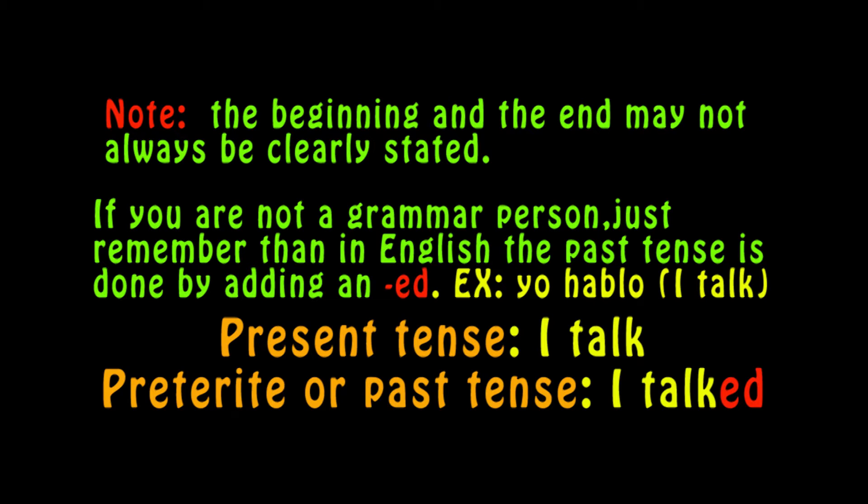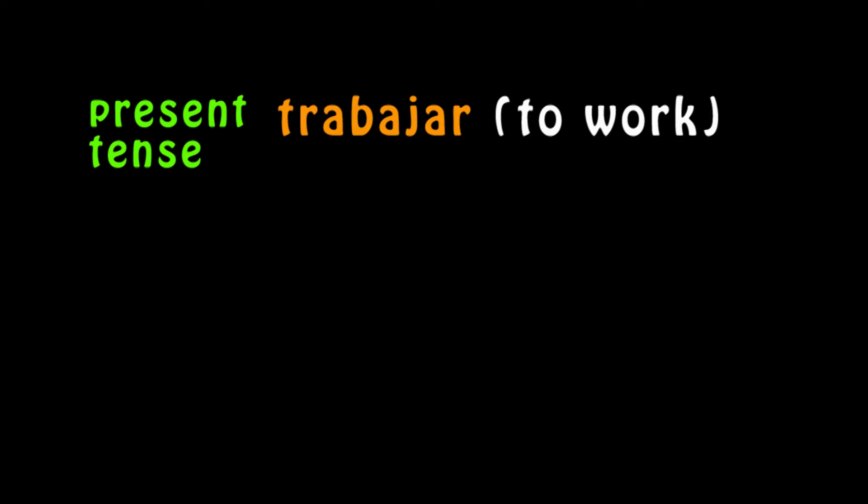If you are not a grammar person, just remember that in English, the past tense is done by adding an -ed. For example, 'I talk' — Yo hablo — that's the present tense. In the preterite or past tense, we add the -ed: 'I talked.'